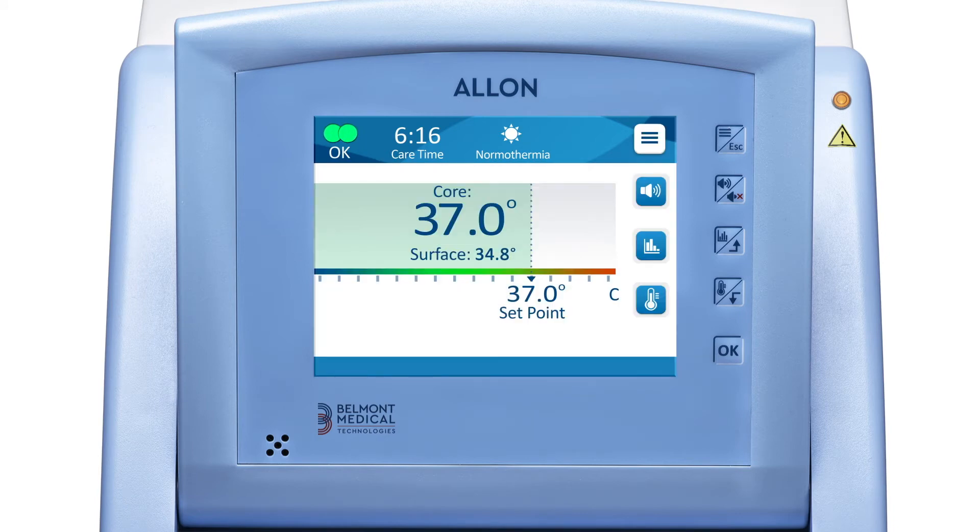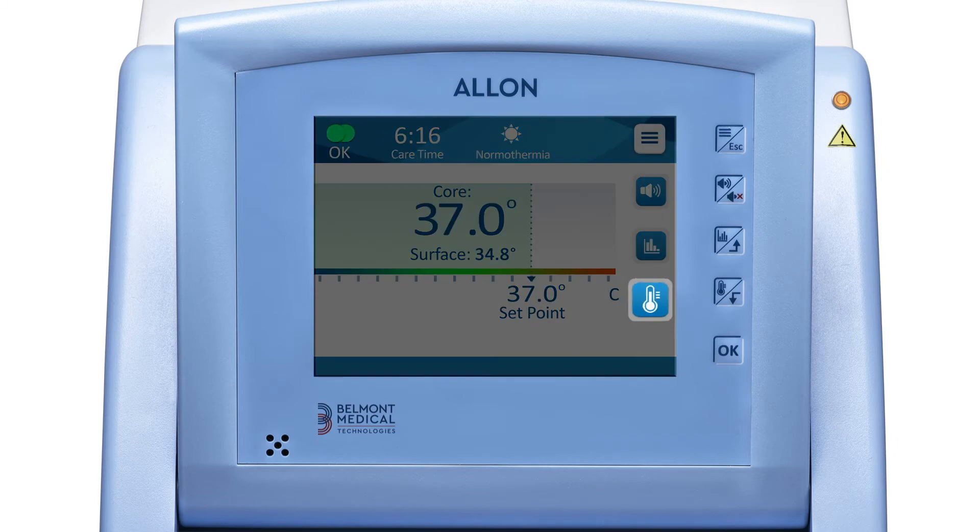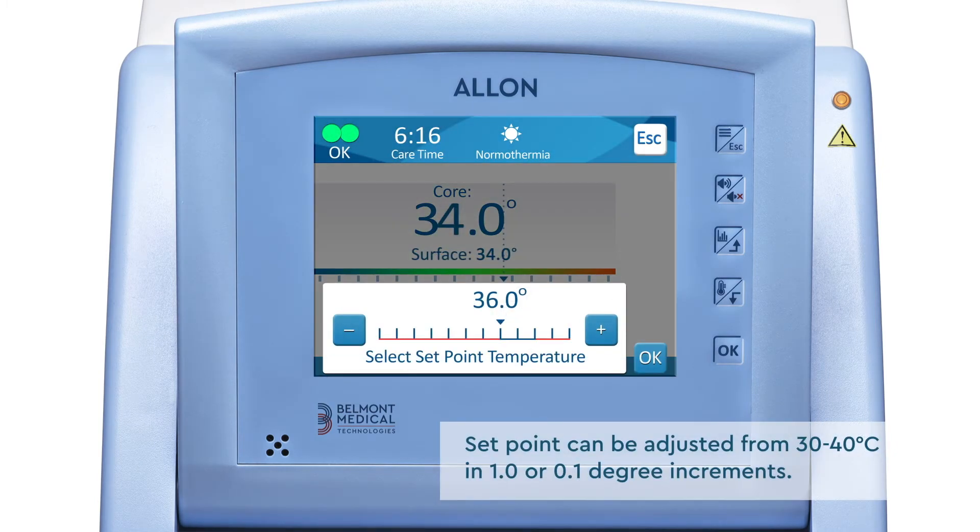To adjust the set point of the patient, press the set point key. You can choose a patient's set point from 30 to 40 degrees Celsius in 1 or 0.1 degree increments.